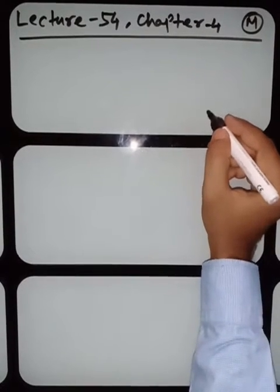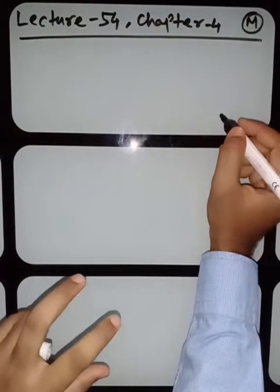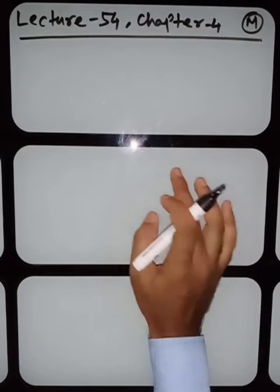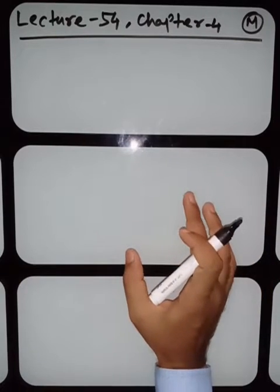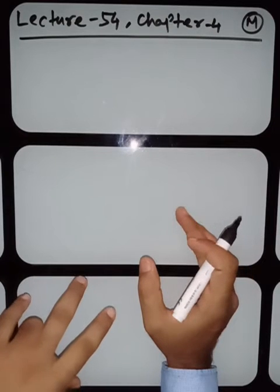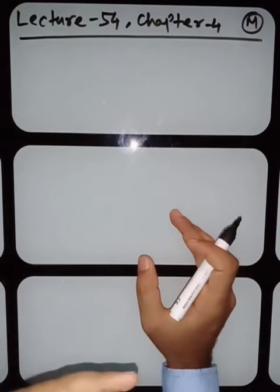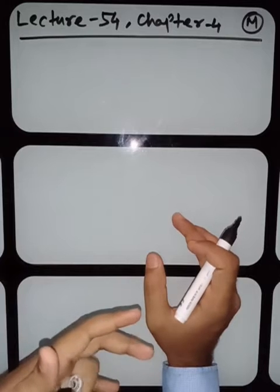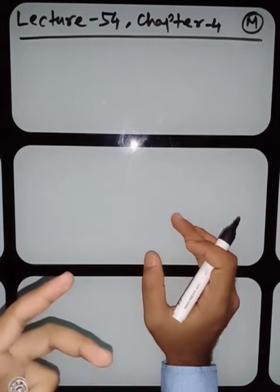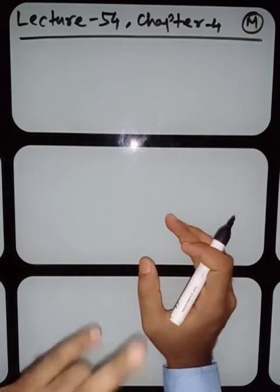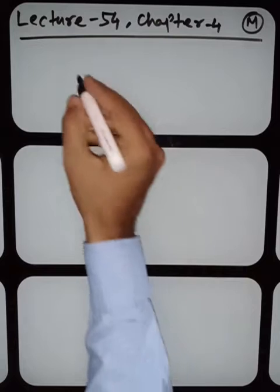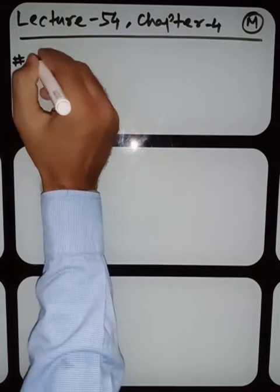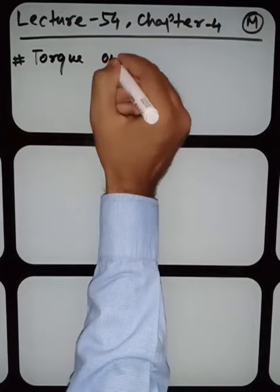My dear students, when we place a current loop, it has a number of sides. Due to the force on different sides in different directions, a couple of forces rotate the coil. We know that if any body or particle is rotating, there must be some torque — without torque, no body can rotate. So here we go with the topic: Torque on Current Coil placed in a uniform magnetic field.